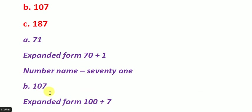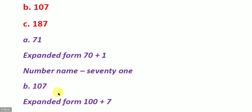Now, 107. First write its expanded form. The expanded form of 107 can be written as 100 — there are no tens in it, 0 tens, can you see? — so 100 plus 7 is its expanded form.